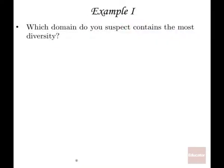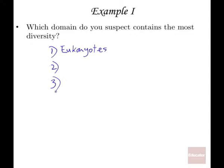The first question in today's discussion is: which domain do you suspect contains the most diversity? Originally, it used to be thought that it was the eukaryotes. Unfortunately, that is no longer the case. We still haven't fully figured out the diversity of bacteria, and most scientists actually believe that bacteria now has a greater diversity than plants, animals, and unicellular and multicellular organisms. However, the jury is still out. The archaea could possibly come in second — or maybe someday even first — because we've only really scratched the surface of these organisms.